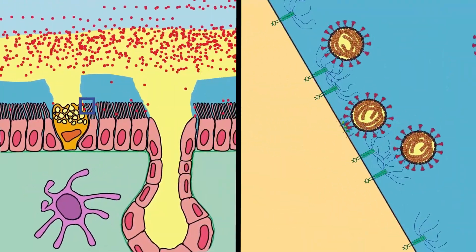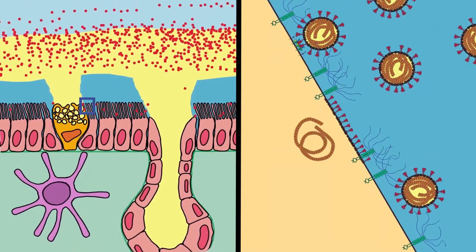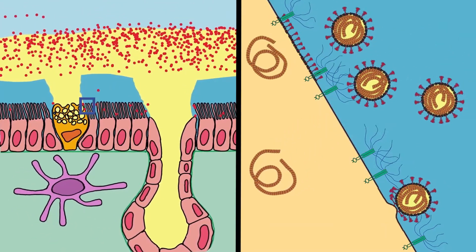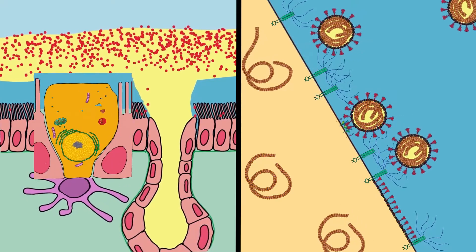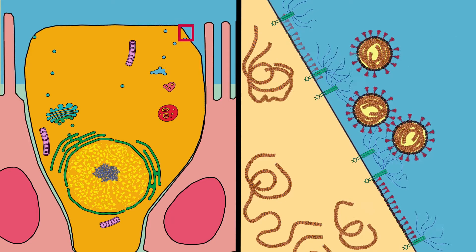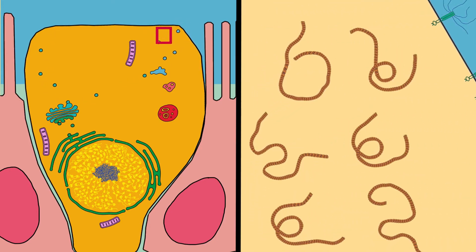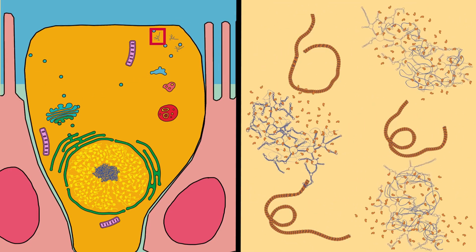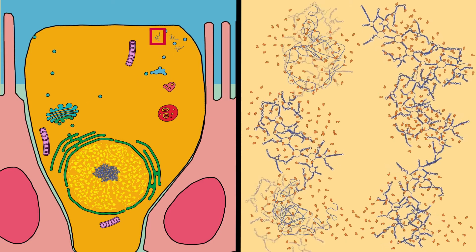The vireons begin to enter the cells by the dozens, the most affected are the cells that express a greater amount of viral receptors ACE2 and TMPRSS2. Viral genomes that have entered the cytoplasm begin to separate from the nucleocapsid proteins, waiting to meet a ribosome.